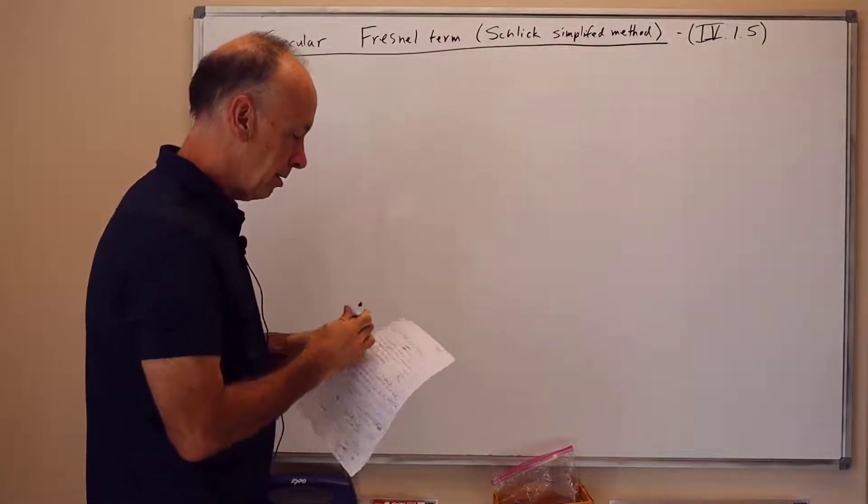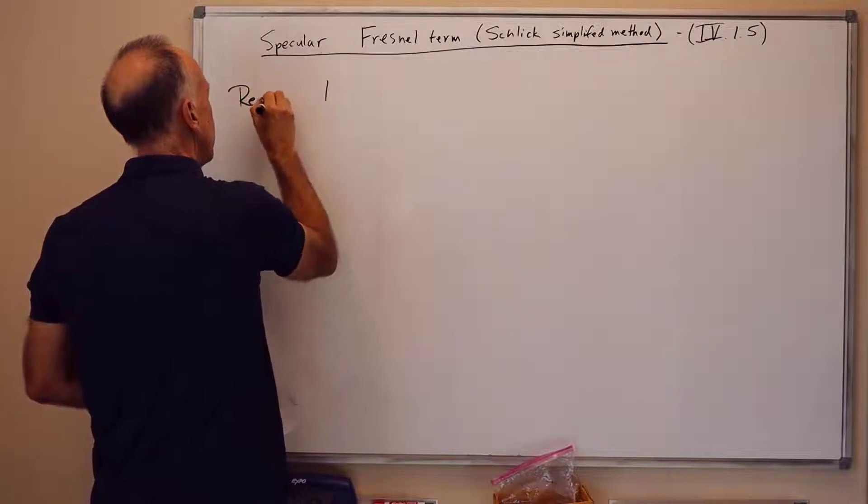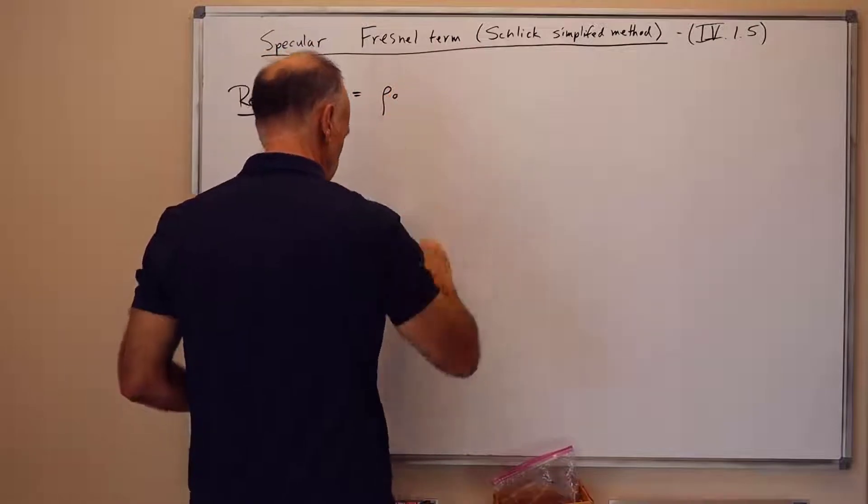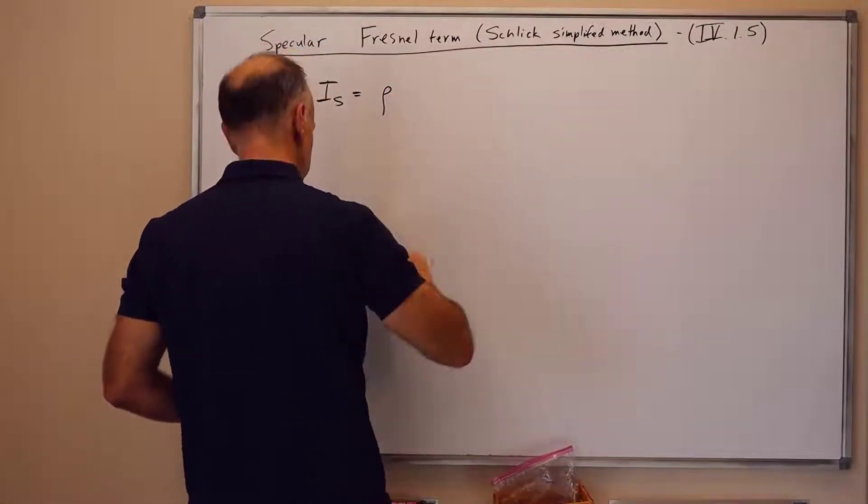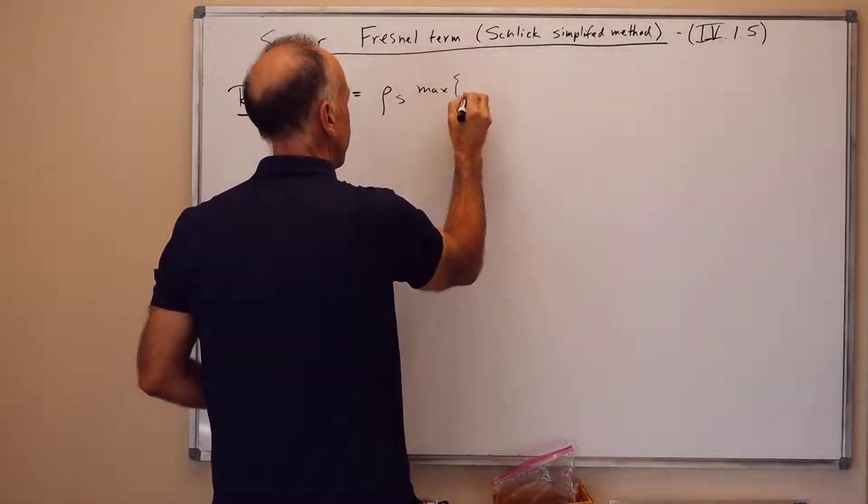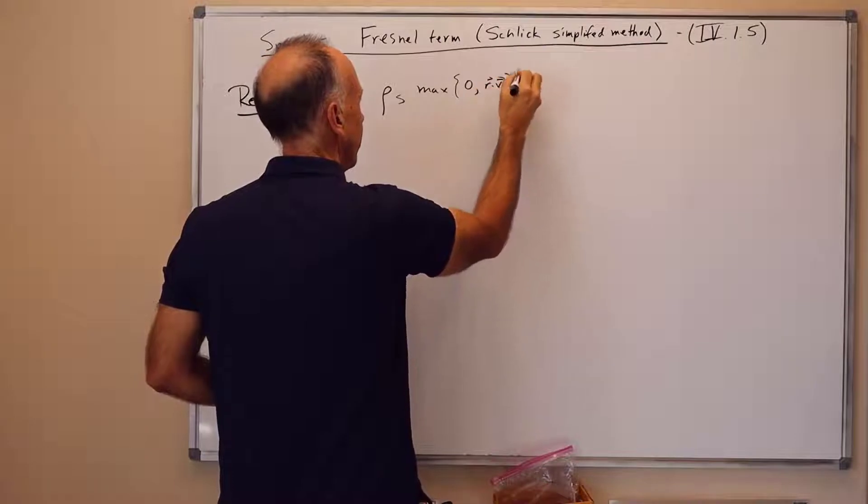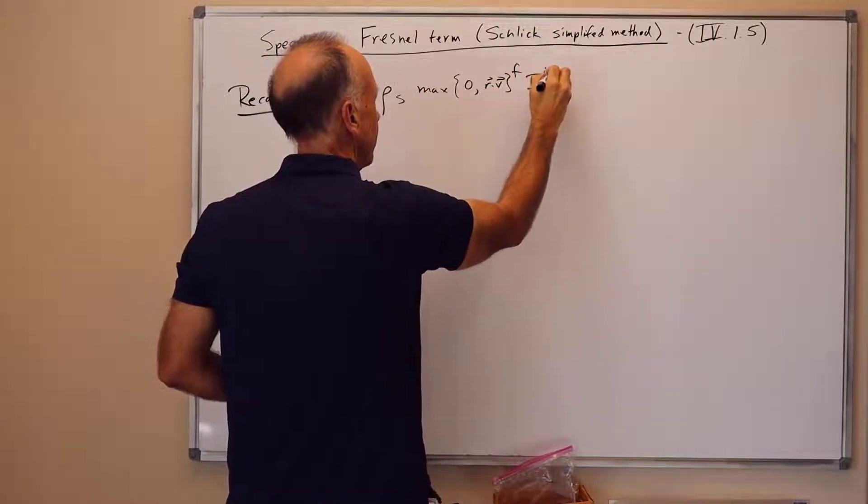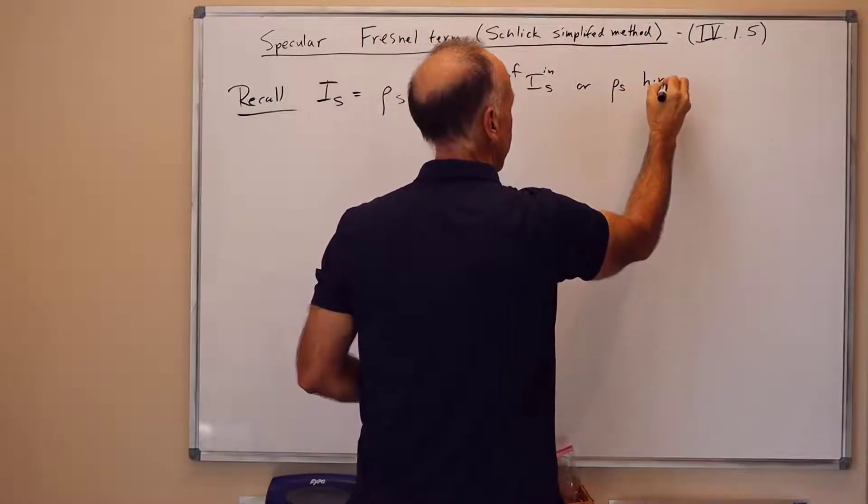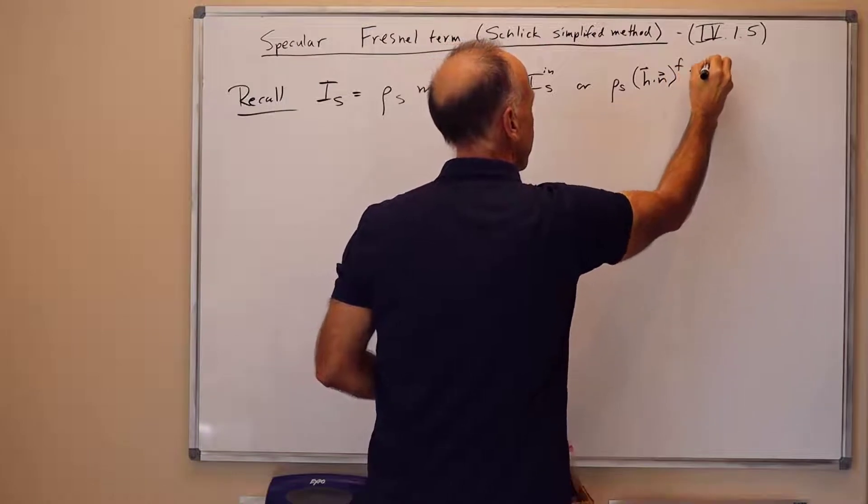So let's recall the formula for specular light. I sub s was rho sub s times, well we had two forms. There was the r dot v form max of 0 and r dot v raised to the power f times i and s, or rho sub s with a halfway vector form h dot n to the f times i and s.